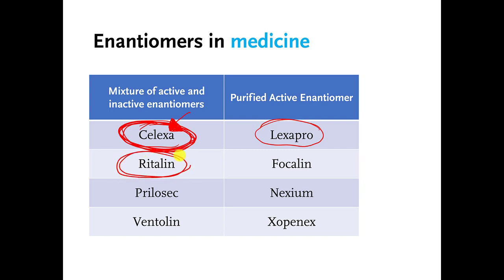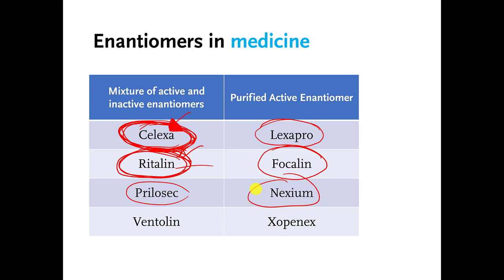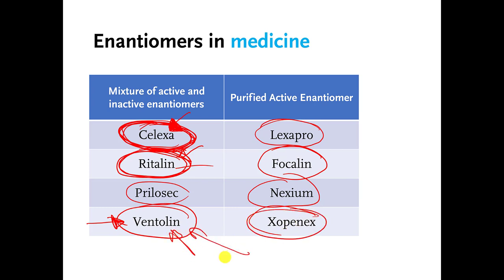There is Ritalin, which is used for ADD — that has two stereoisomers, one works and the other does not. Then there is Focalin, which is Ritalin with the junk thrown out. Prilosec and Nexium are the same story. There is a drug called Ventolin, which is used to treat asthma, and it has two stereoisomers. Xopenex is the same thing as Ventolin but with the inactive stereoisomer removed. There are many examples of this in medicine.